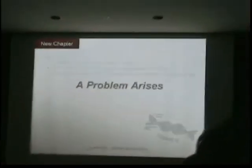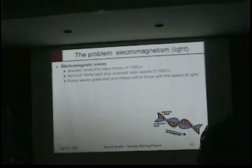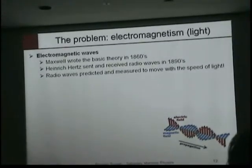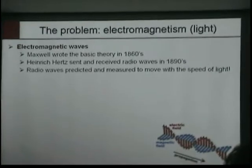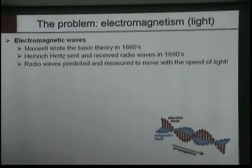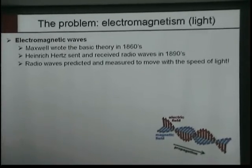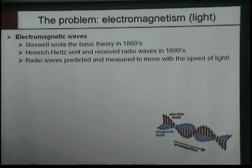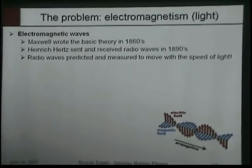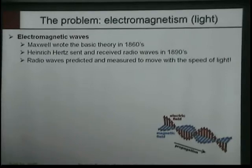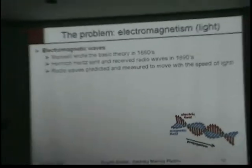But then we got a problem. The problem was electromagnetic waves. Maxwell wrote the whole theory of electromagnetic waves. Hertz sent and received radio waves in the 1880s-90s, and those radio waves were predicted to move with some velocity. Maxwell said he knew how the velocity of light should be related to other things that were already measured, and he was able to put that into the equation and say the velocity of light should be 300,000 km per second.